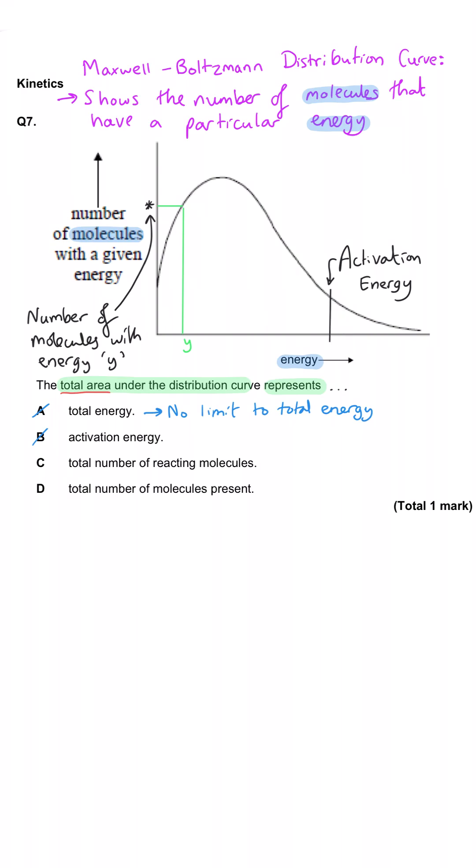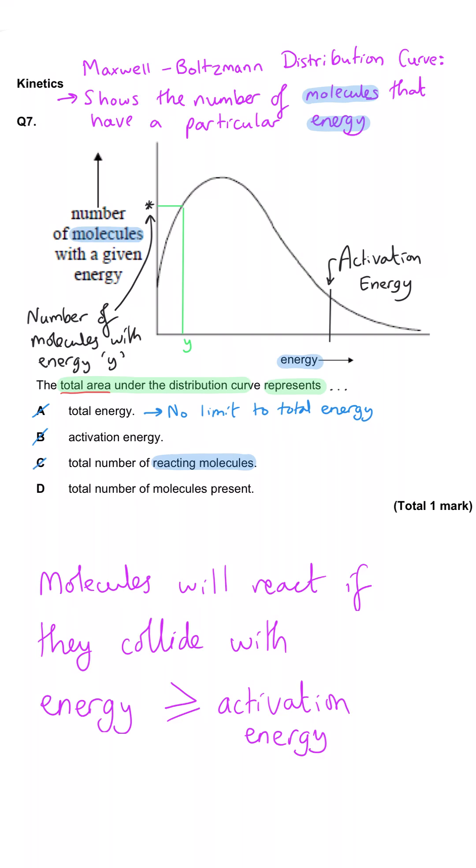The total number of reacting molecules. That's a tricky decoy here because it's not the number of reacting molecules. The reacting molecules will be these to the right-hand side of the activation energy that I drew, and those are the ones that will react. So this is the area under the curve past the activation energy, which means D must be correct.